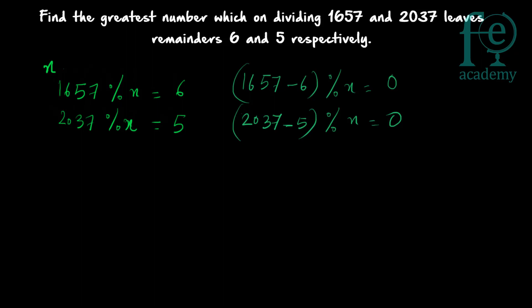1657 minus 6 gives 1651, so 1651 mod x = 0. And 2037 minus 5 gives 2032, so 2032 mod x = 0. You have to find the greatest value of x that satisfies both equations: 1651 mod x = 0 and 2032 mod x = 0.